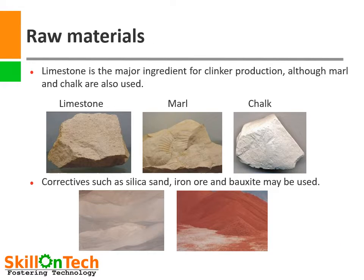Major raw materials for cement are calcium carbonate rich minerals such as limestone, marl, chalk, etc. Sometimes mudstone or claystone are also used, which have low calcium carbonate content. Based on desired mineralogical composition of clinker, correctives such as silica sand, iron oxide, and bauxite are also added.